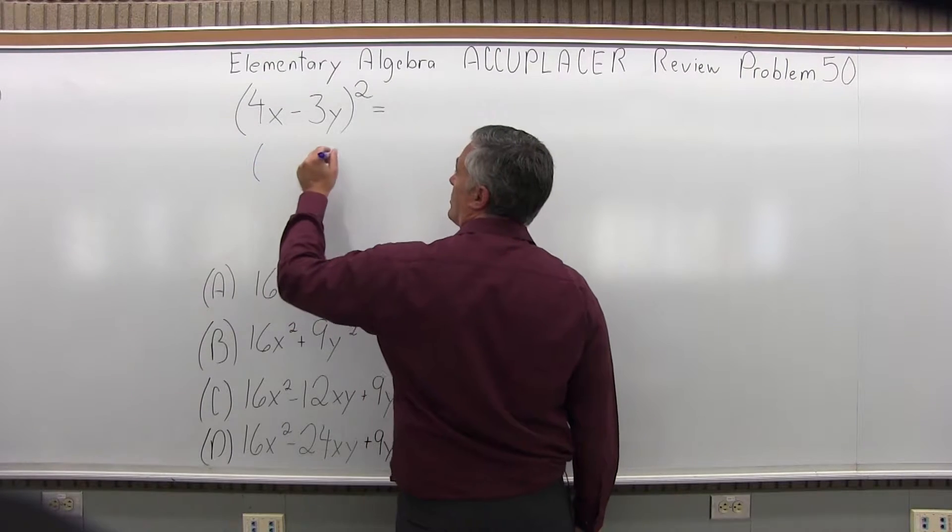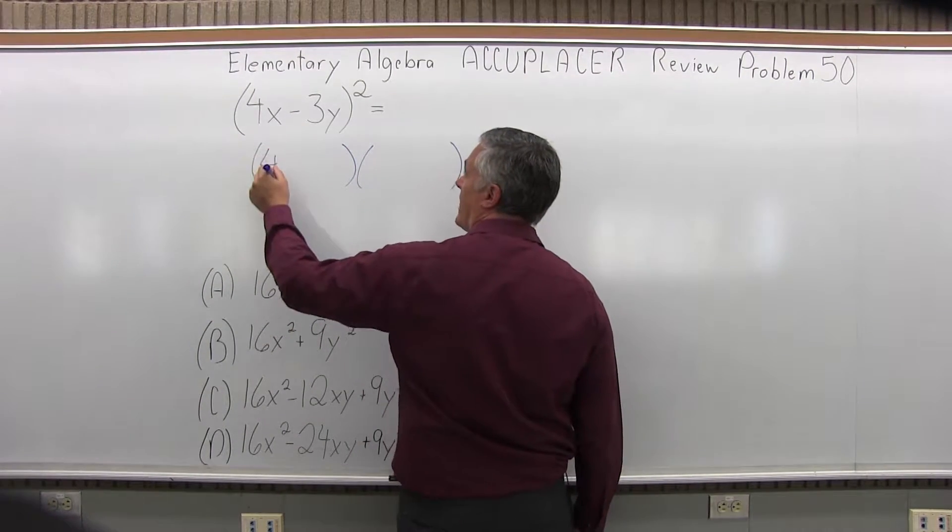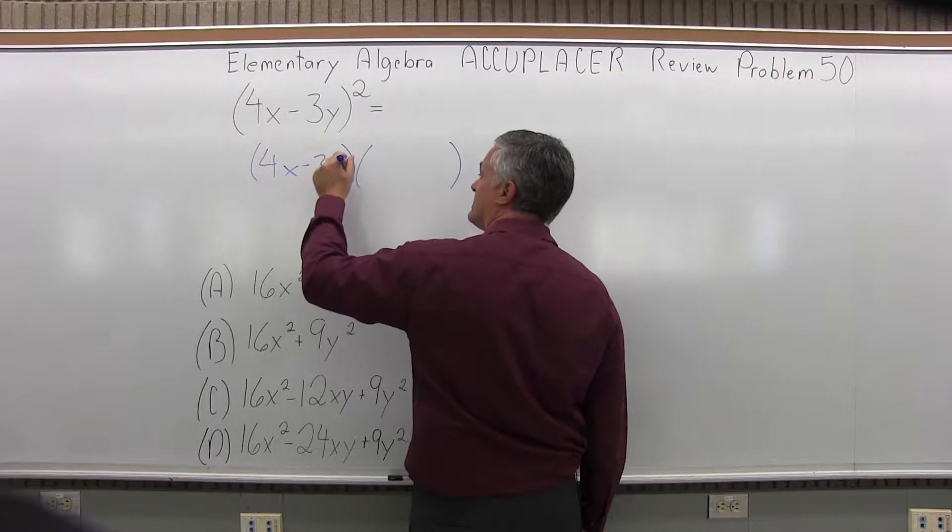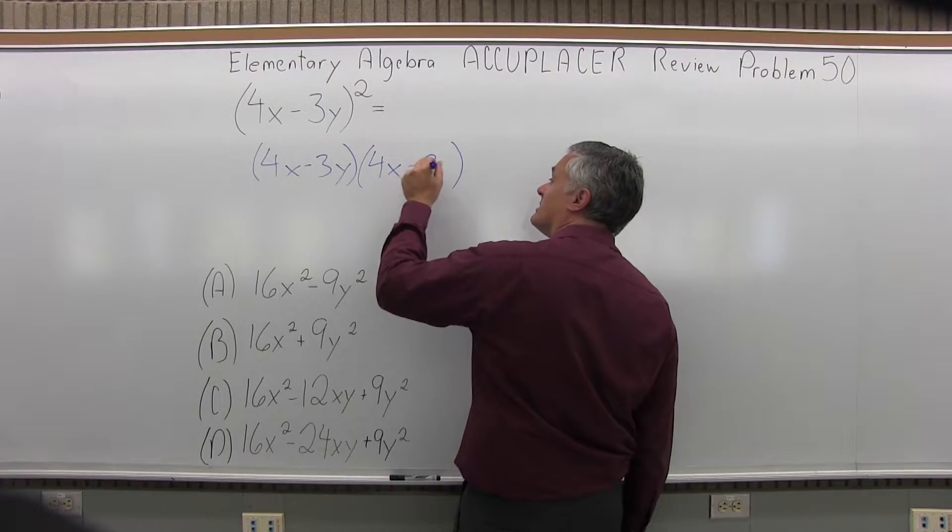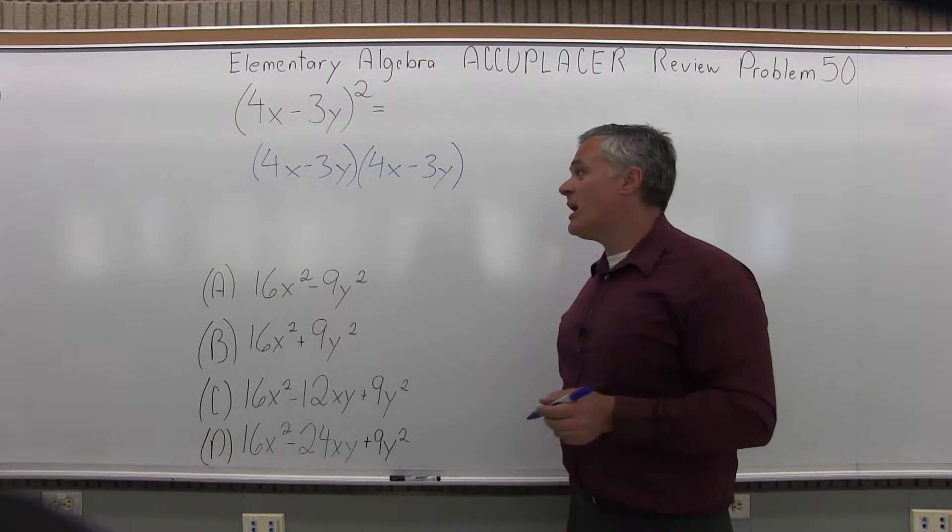What that means is we're going to have that set of parentheses times itself. So we'll have 4x minus 3y in parentheses times 4x minus 3y in parentheses again. And we have to multiply that out and combine whatever we can.